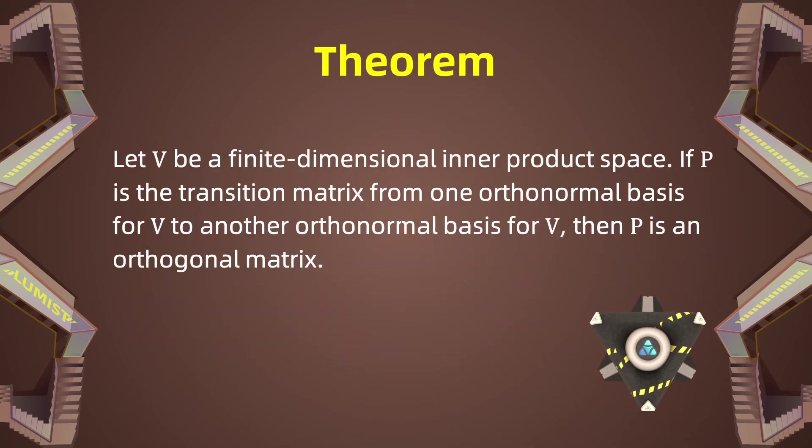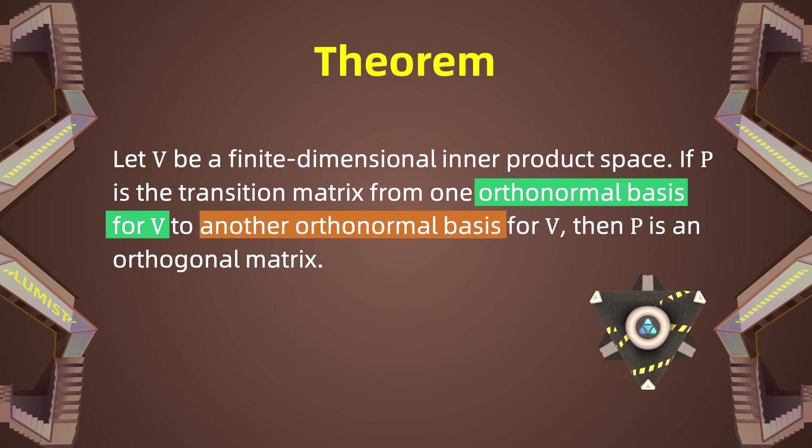And here we have a theorem about orthogonal matrices. This is a key result in orthogonal matrices. So pay attention to this. Our setting is the following. We're working in a vector space with an inner product. The vector space is finite dimensional. You can think of this as a Euclidean space. Now, suppose that we have an orthonormal basis for V and we change that orthonormal basis to another orthonormal basis for V. What we use to do that is a transition matrix. If we change from an orthonormal basis to another orthonormal basis, then that transition matrix is orthogonal.